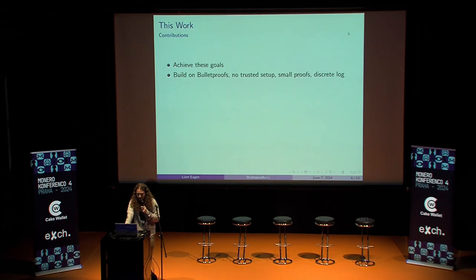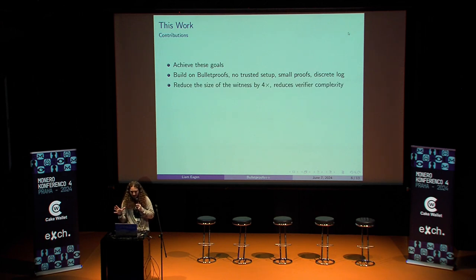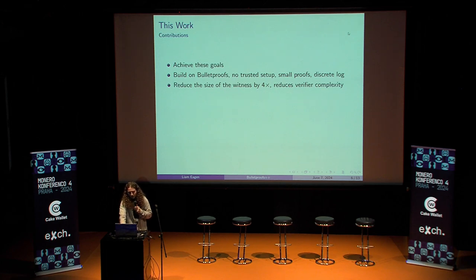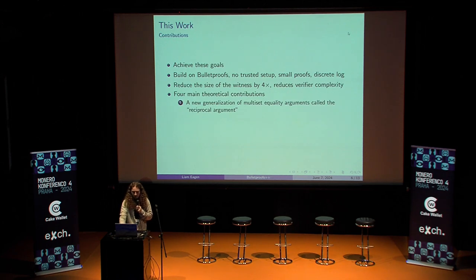So we kind of accomplished this. There are a lot of details in the paper that I'm not going to talk about in the presentation. I'm going to focus mainly on one of the techniques that is also applicable to SNARKs generally. The way we do this is we start with Bulletproofs and make a bunch of changes. Bulletproofs gives us no trusted setup, relatively small proofs, and reducibility to the discrete log problem — the same thing as signatures that people use. It's not quantum resistant, but it's very well studied. There are mainly four theoretical contributions the paper makes. The first is a new type of multi-set equality argument, which I'm going to talk about, that we call the reciprocal argument.